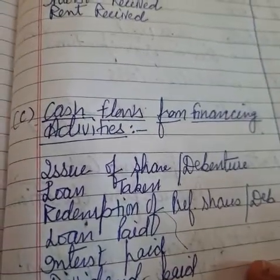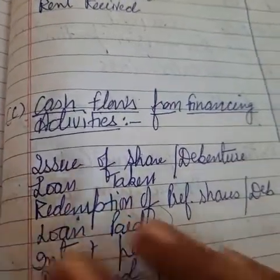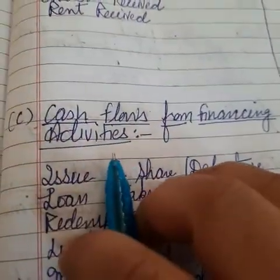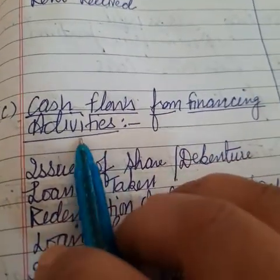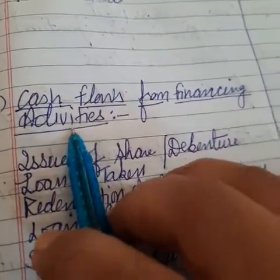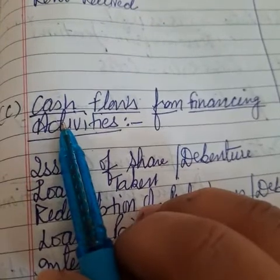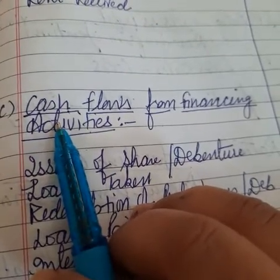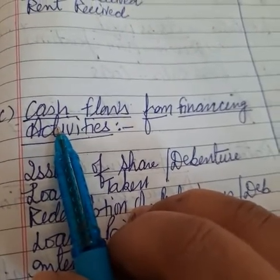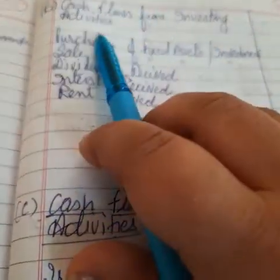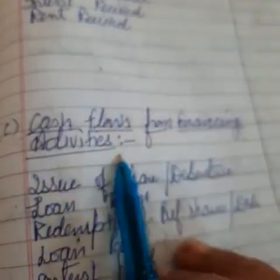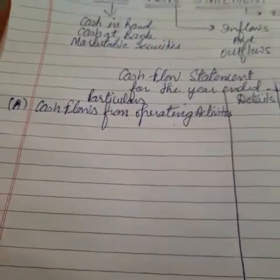Good morning everybody, I hope you all are fine. Let's continue our chapter number 5, that is cash flow statement, volume number 3. Let's discuss our activities: activity A is cash flows from operating, activity 2 is cash flows from investing activities, and activity 3 is cash flows from financing activities — operating, then investing, then financing.